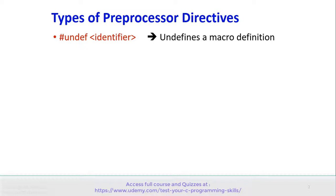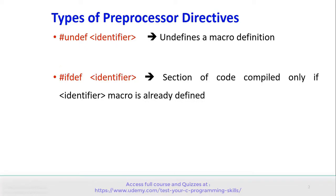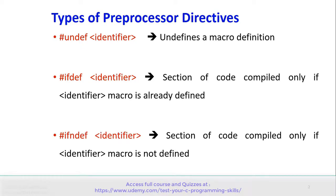Hash Undefined Identifier — this undefines a macro definition. Hash if defined identifier — a section of code is compiled only if the identifier macro is already defined. Hash if not defined identifier — a section of code is compiled only if the identifier macro is not defined.